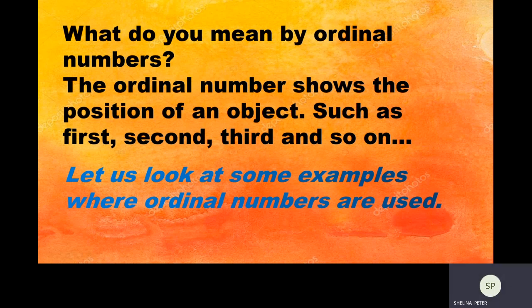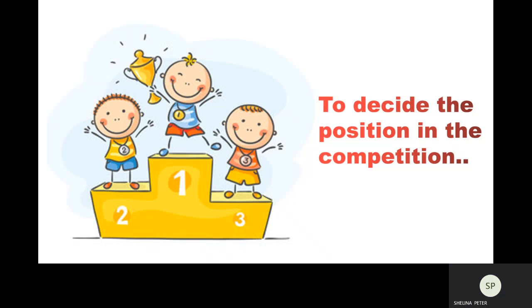I hope it is clear to you. So now let us look at some more examples where ordinal numbers are used. Can you see these happy faces? We use ordinal numbers to denote the position in a competition. This child has got the first position and he is very happy. This child has got the second position. He is also happy. And the last, third position he has got. He is also very happy.